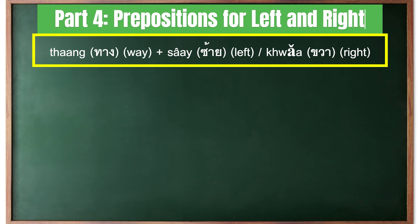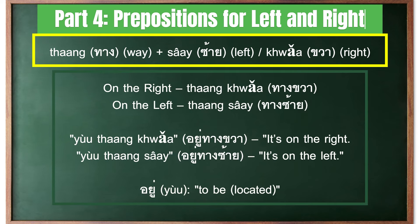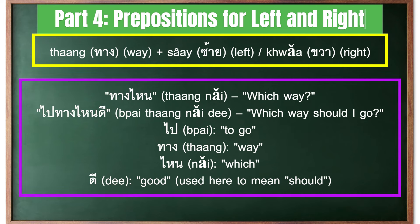In Thai, the word ทาง means 'way' and is used to create prepositions for directions. ซ้าย means 'left' and ขวา means 'right'. To say 'on the right' you would say ทางขวา, and อยู่ทางขวา means 'it is on the right'. To ask which way, you can say ทางไหน. Or if you want to ask 'which way should I go', you can say ไปทางไหนดี.